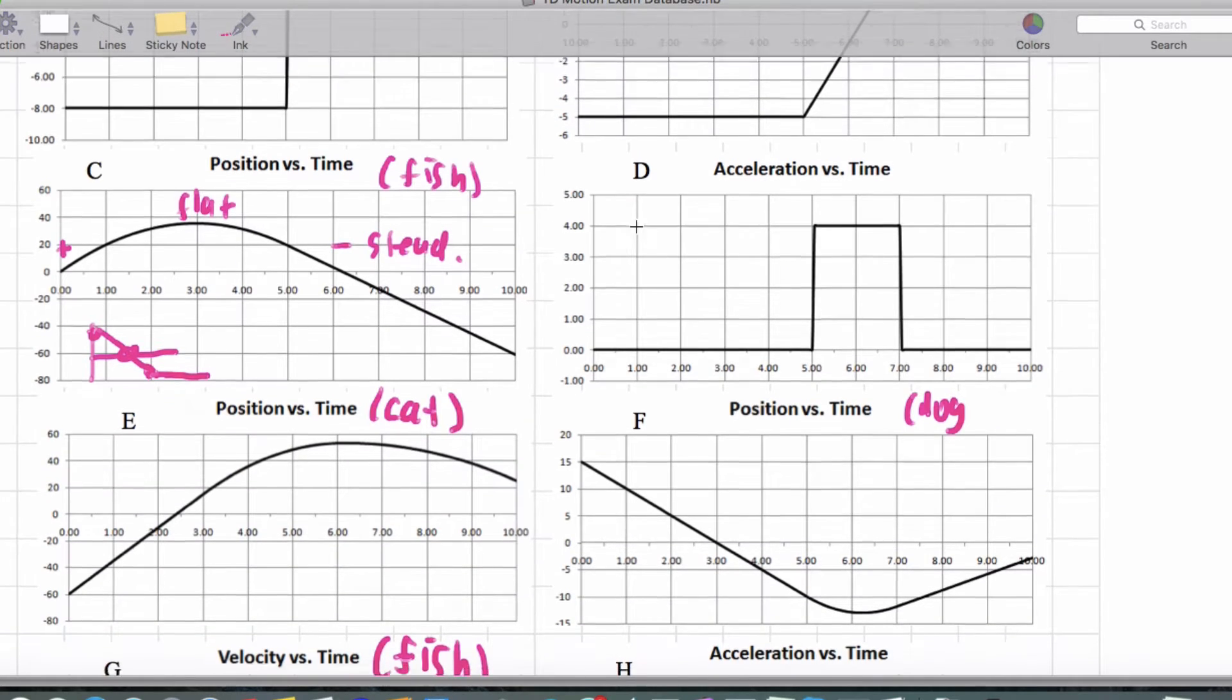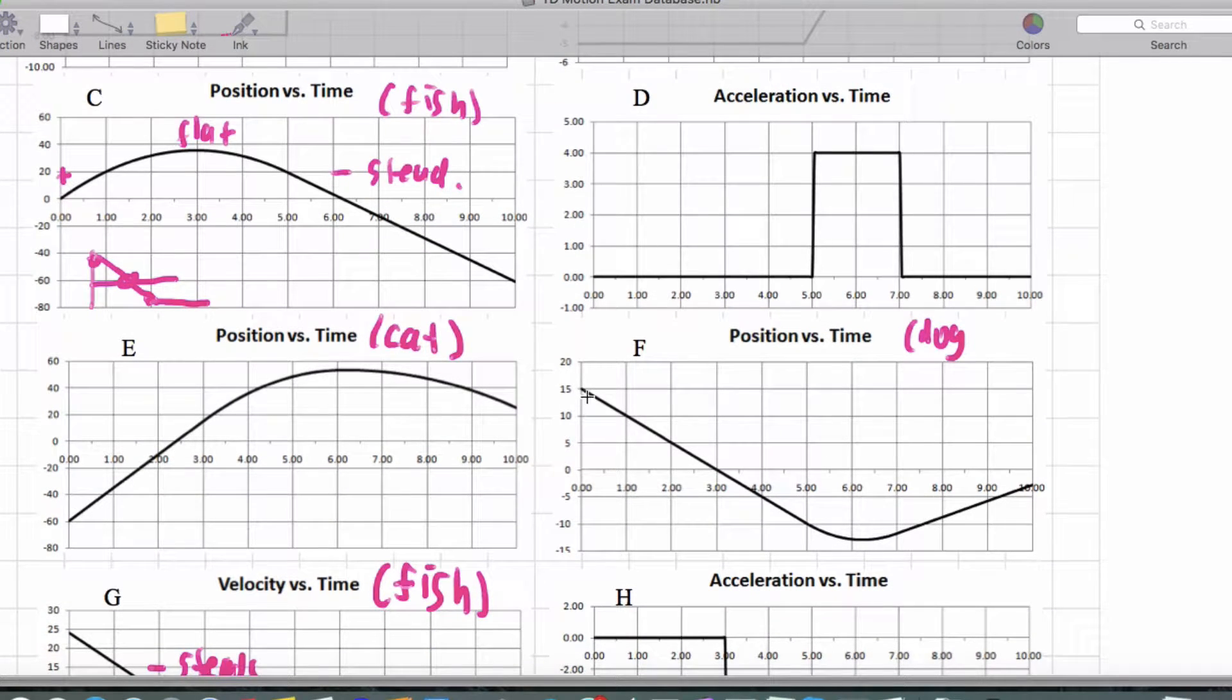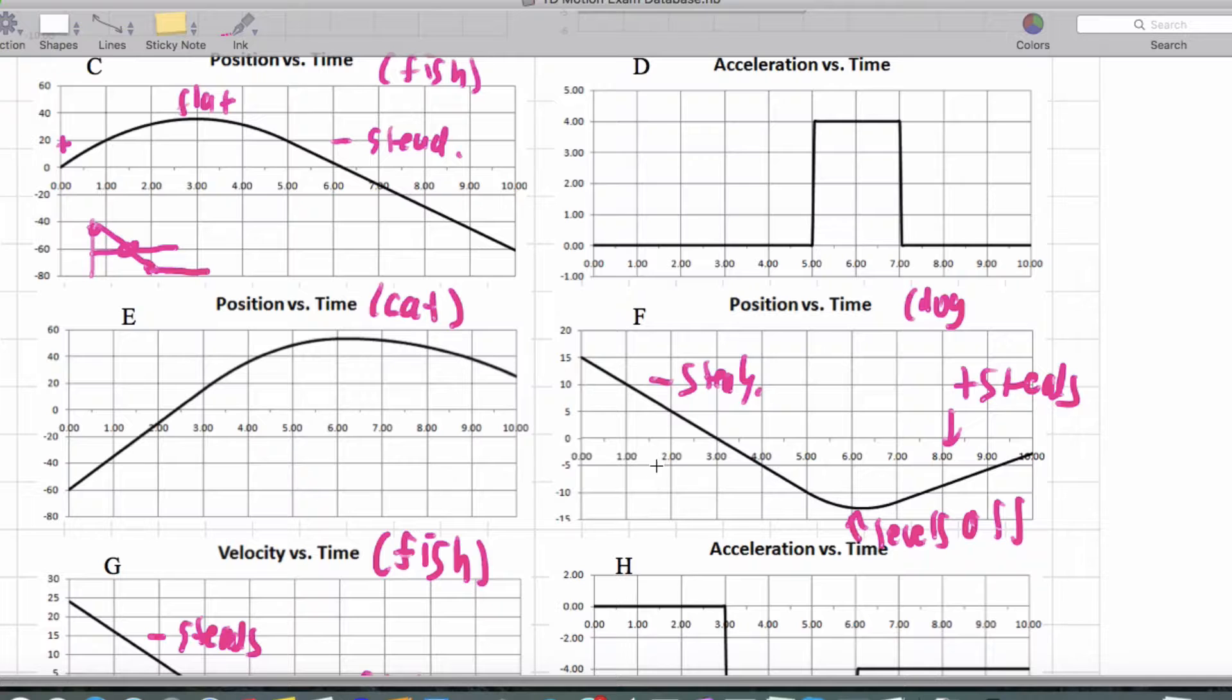Now let's talk a little bit about the dog. The dog starts at 15, and so we have a negative steady speed, and then it levels off. And then it's positive and steady but a little bit less speed, so maybe a little bit of a flatter slope but still a slope.